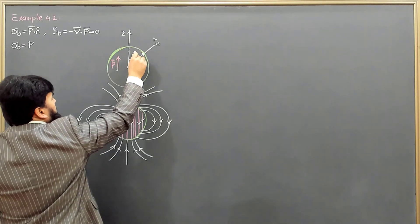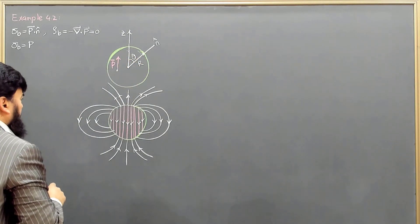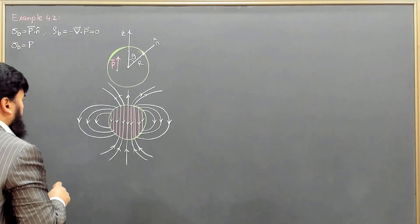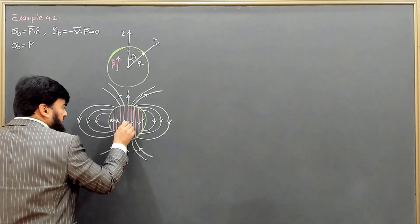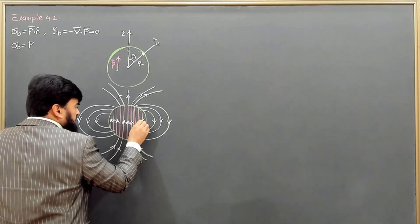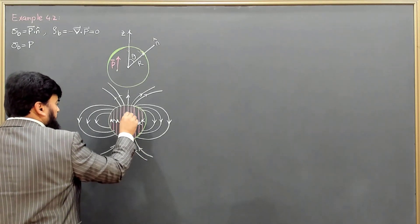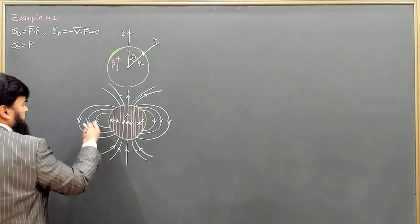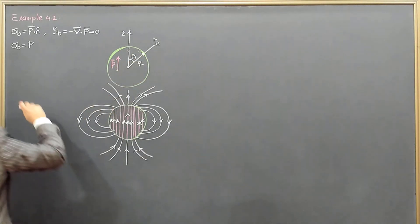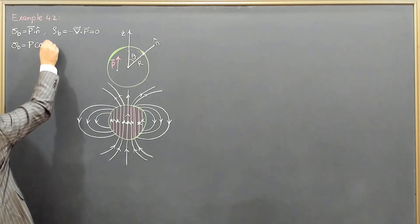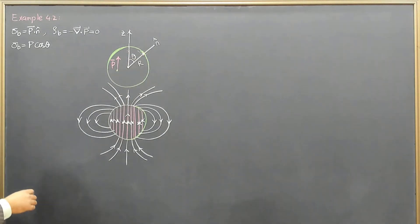So σ_p equals P dot n-hat. Since P is along the z-direction, the angle between P and n-hat is θ. Therefore P dot n-hat comes out to be P cos θ.